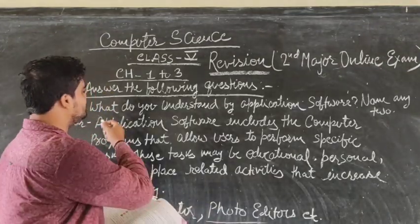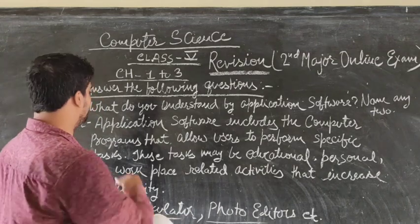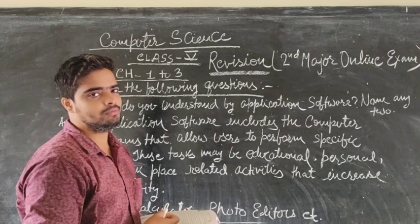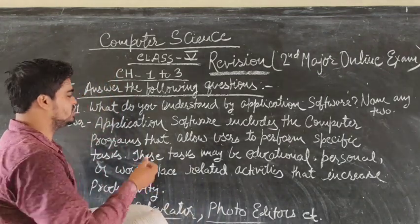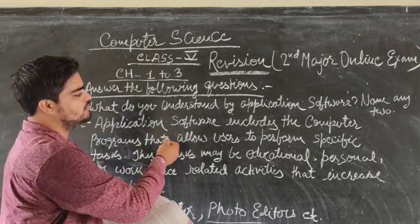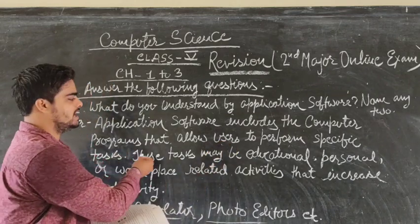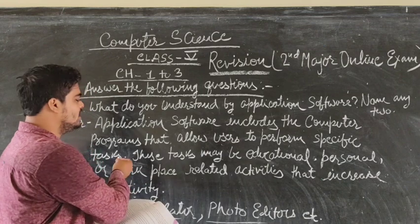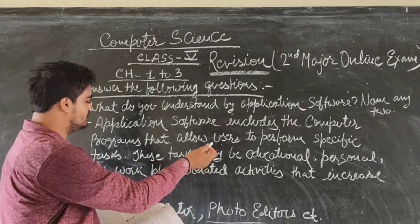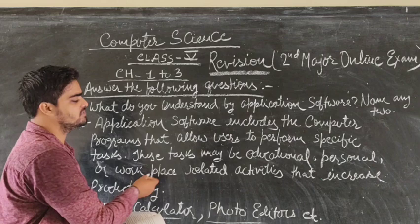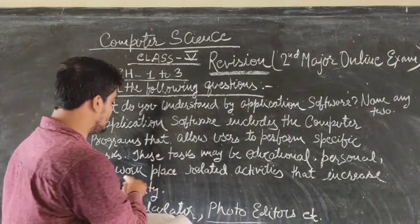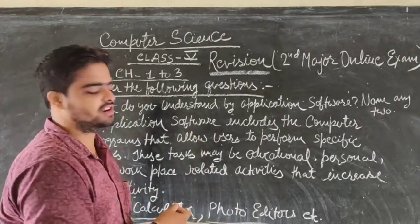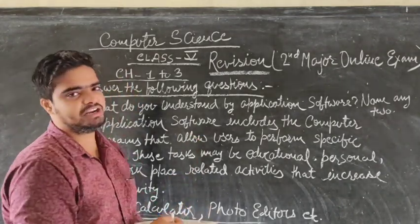Question 4: Answer the following questions. Question 1: What do you understand by the application software? Name any two. Answer: Application software includes the computer programs that allow users to perform specific tasks, and these tasks may be educational, personal, or workplace related activities that increase productivity. Examples of application software are calculator and photo editor.